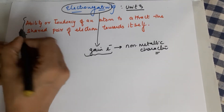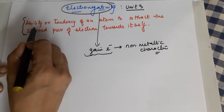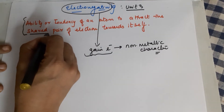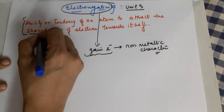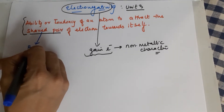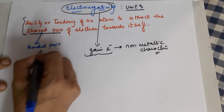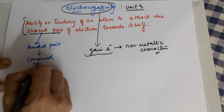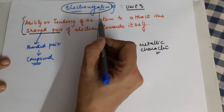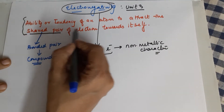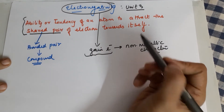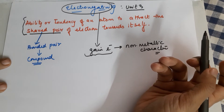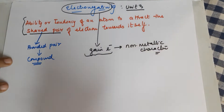Coming to class 11th, we have a proper definition. The definition states that electronegativity is the ability or tendency of an atom to attract the shared pair — the bonded pair — of electrons towards itself. It refers to attracting the bonded pair of electrons in a compound from the other bonded atom.